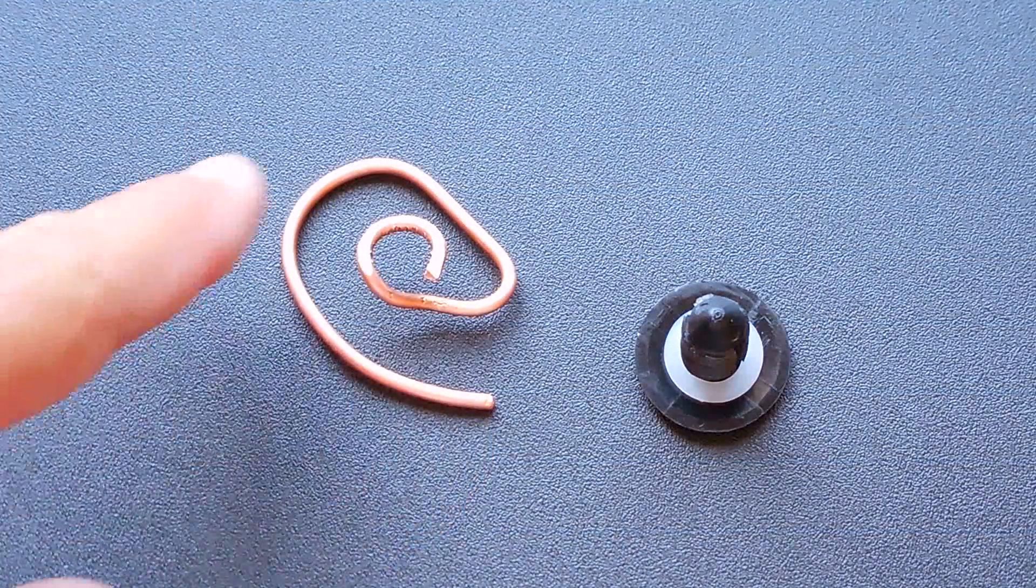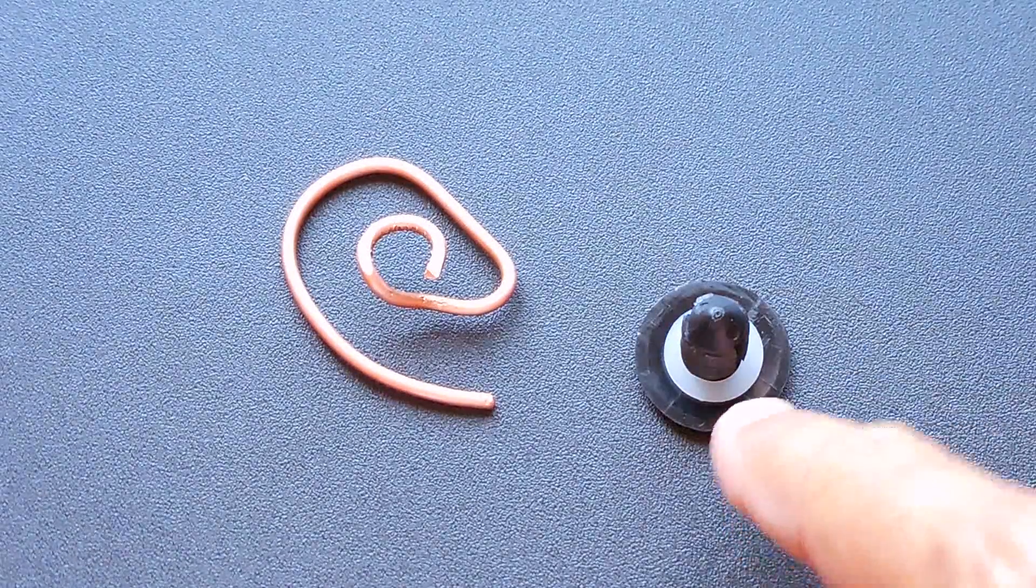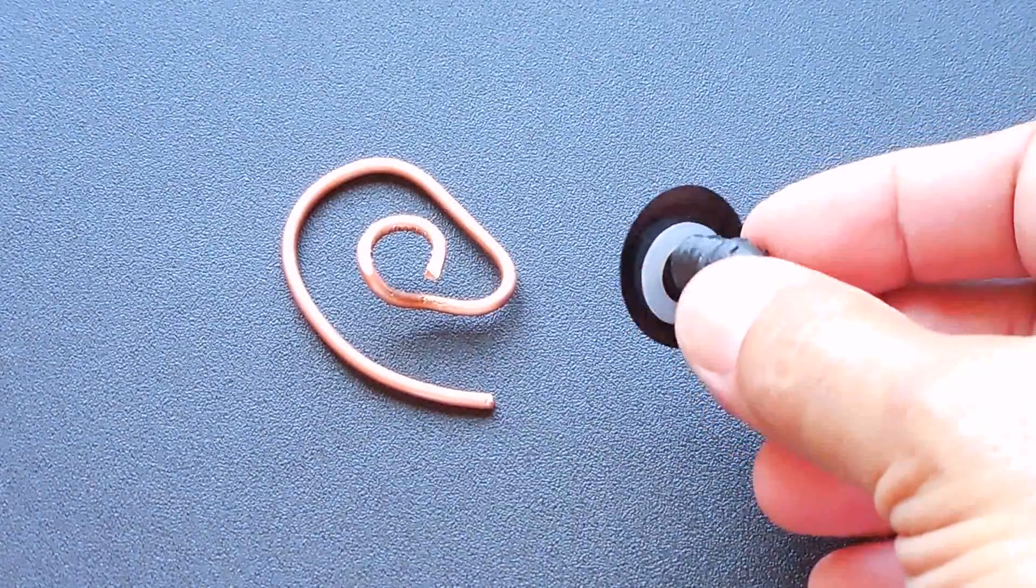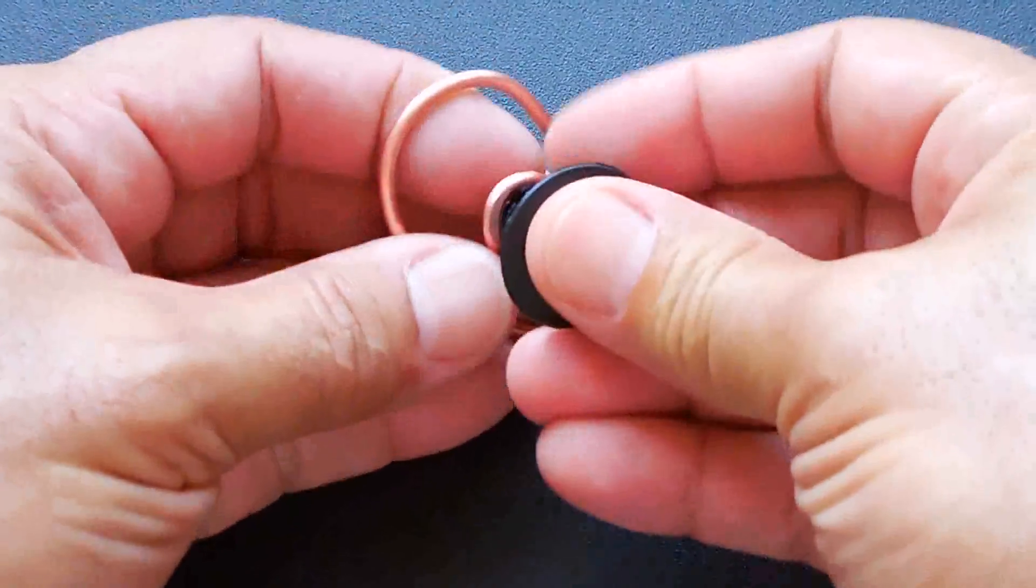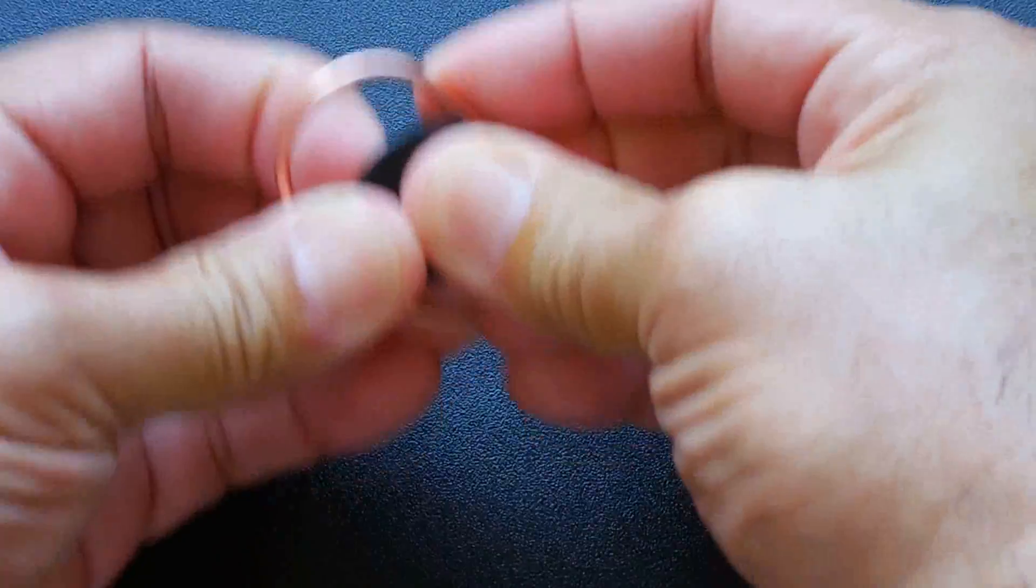Take the copper wire that's been bent into the shape of your ear. You're going to take the body clip right here, the panel retainer that has a nylon washer slid over it and push it into here all the way down until it's fully seated right there.